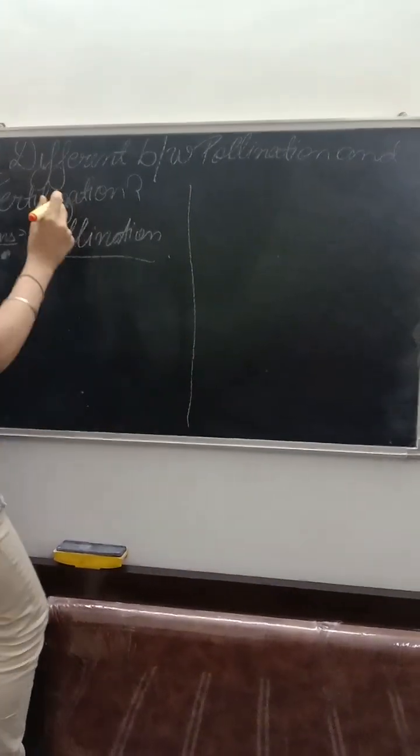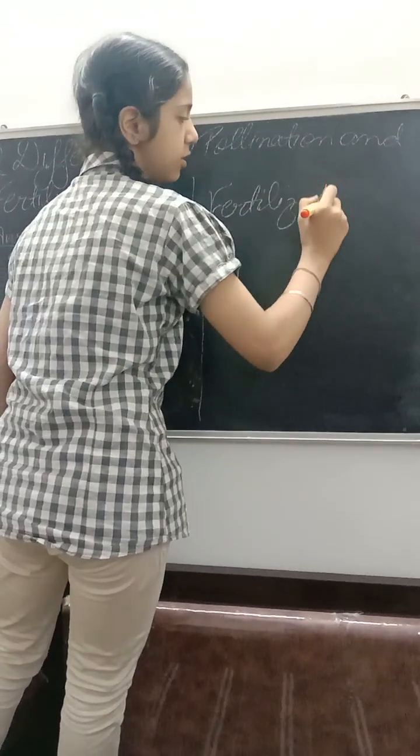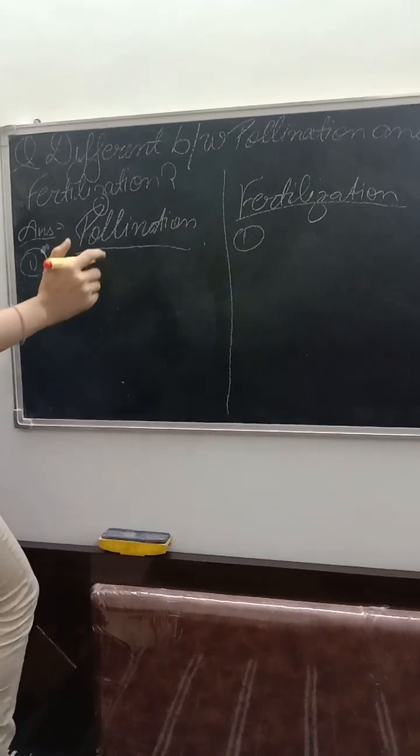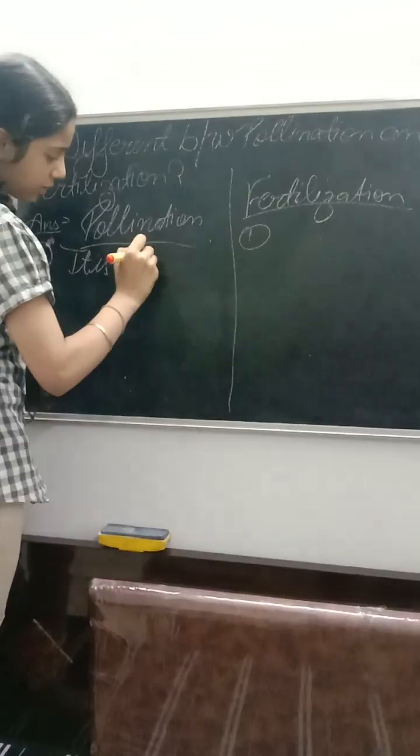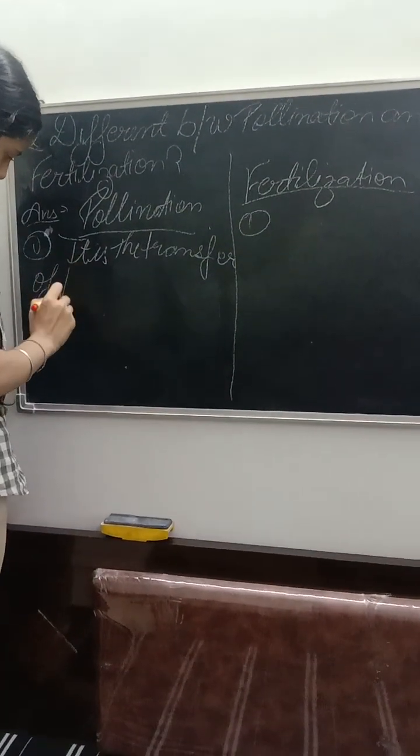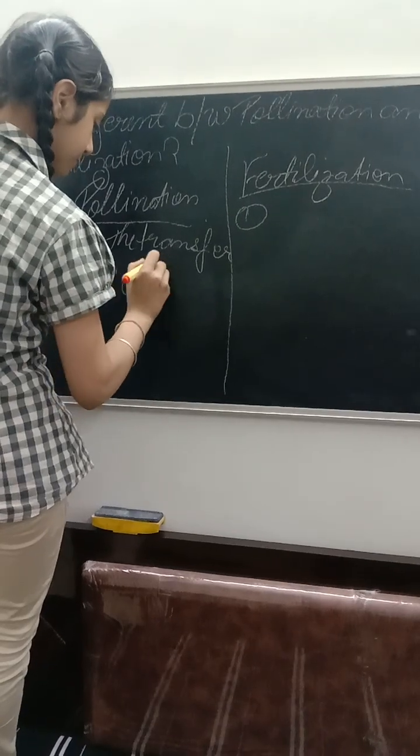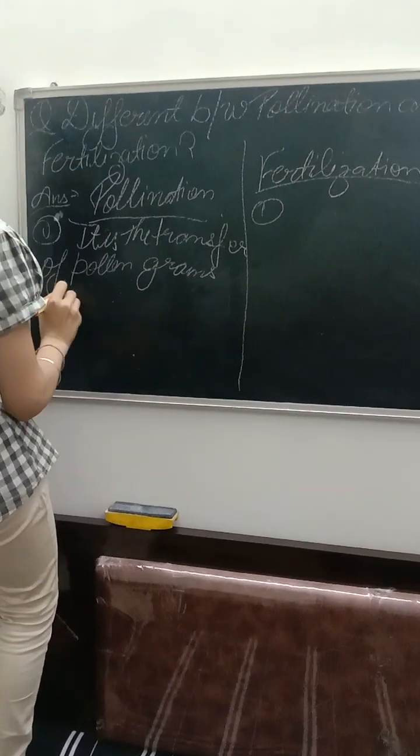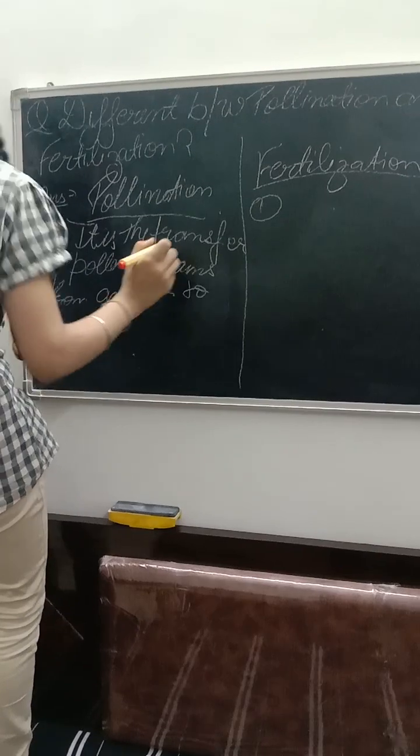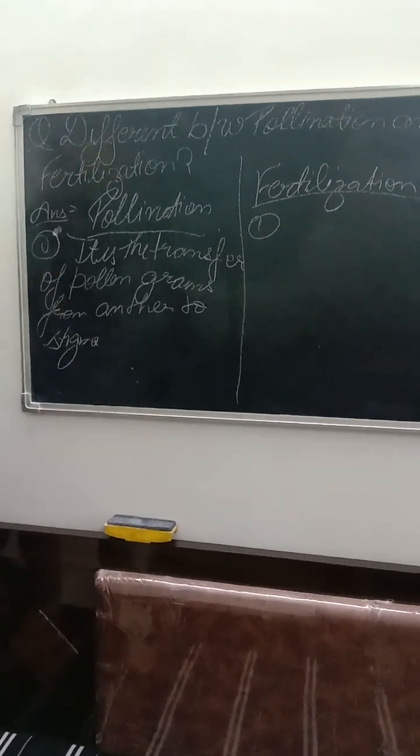First is pollination, and second is fertilization. The first point about pollination: it is the transfer of pollen grains from anther to stigma.